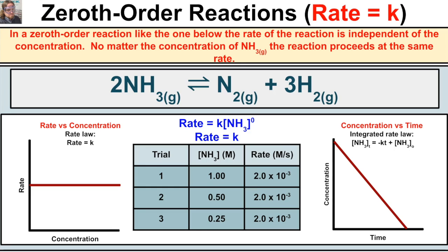In a zeroth order reaction, the rate of the reaction is independent of the concentration. No matter the concentration of ammonia gas, the reaction proceeds at the same rate. Let's suppose we have a chemical reaction where ammonia gas is decomposing into nitrogen gas and hydrogen gas, and we perform this reaction on three different trials.